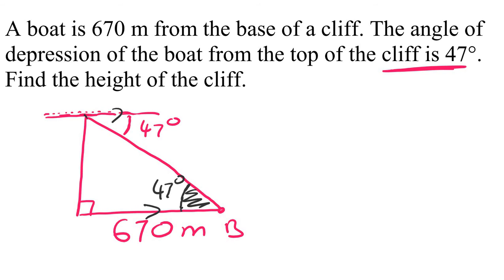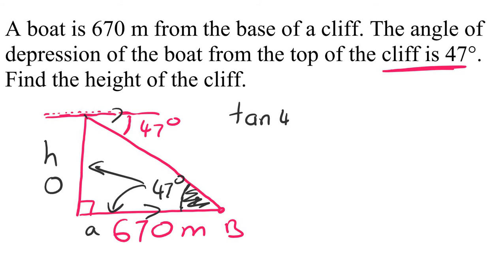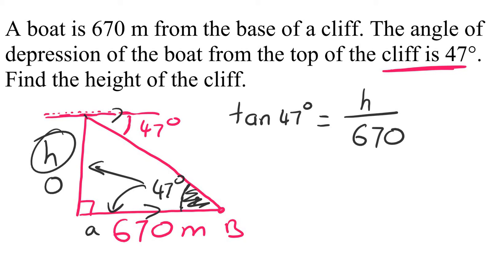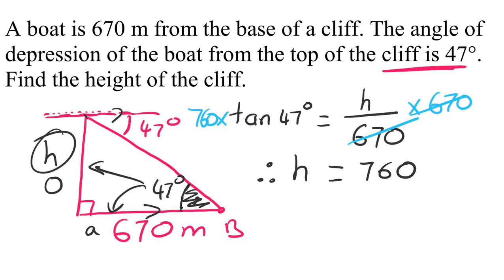We want to find the height h of the cliff. H is opposite the angle, and 670 is adjacent to the angle — so we have O over A, which means tangent. So tan of 47 degrees equals opposite over adjacent: h over 670. To solve, multiply both sides by 670, which cancels the denominator, giving h equals 670 times tan of 47 degrees.